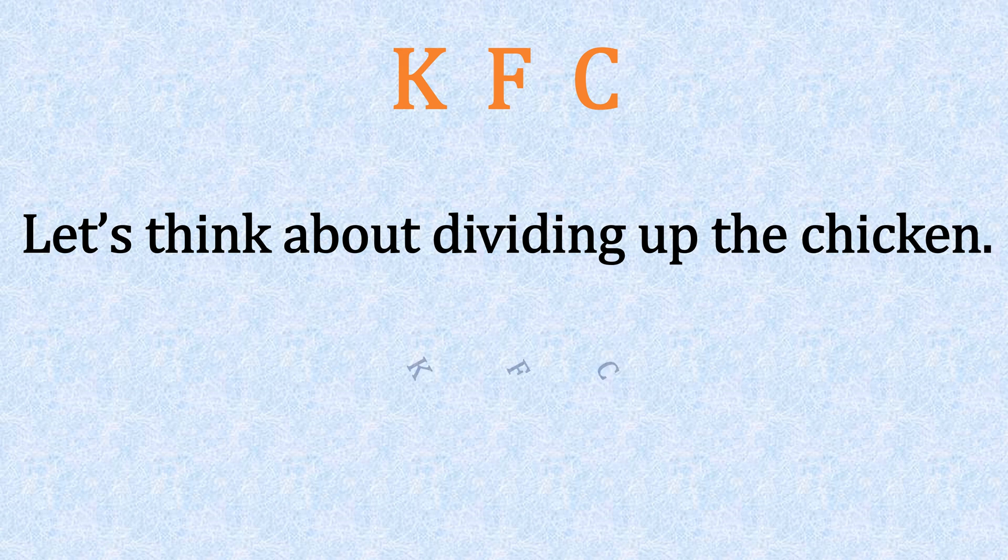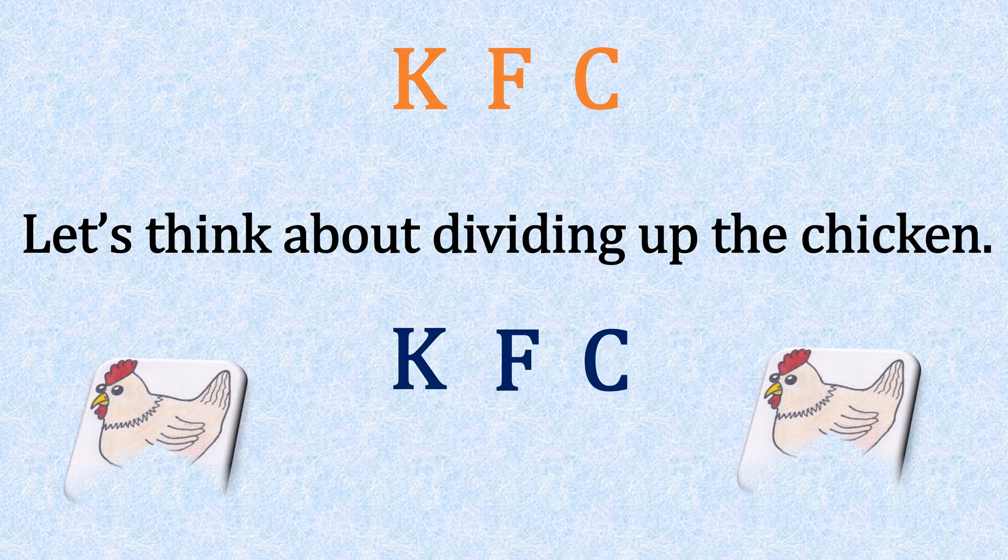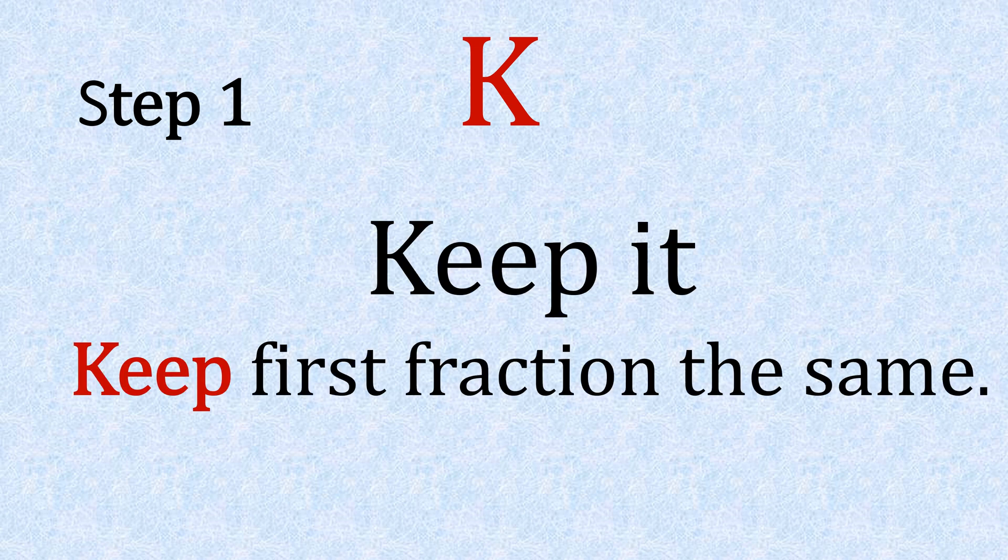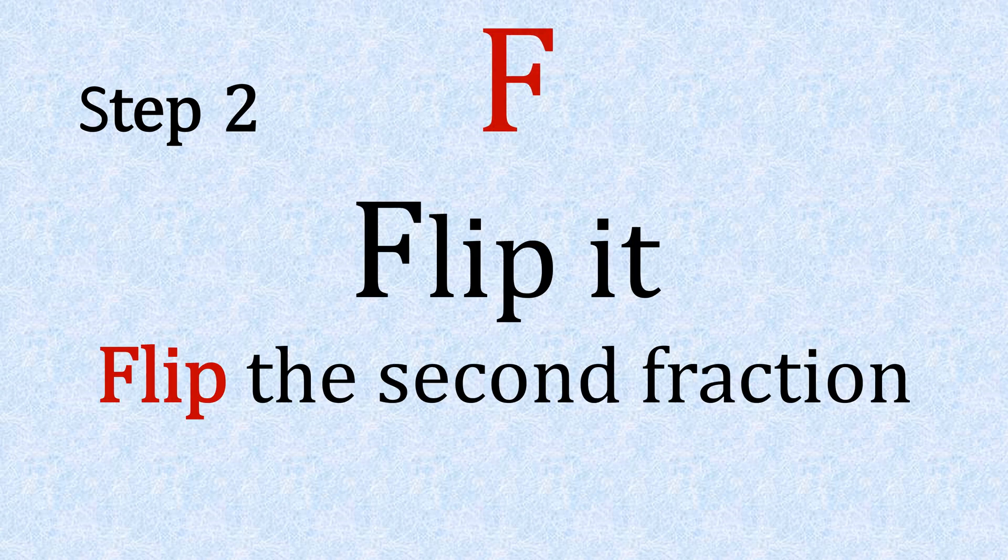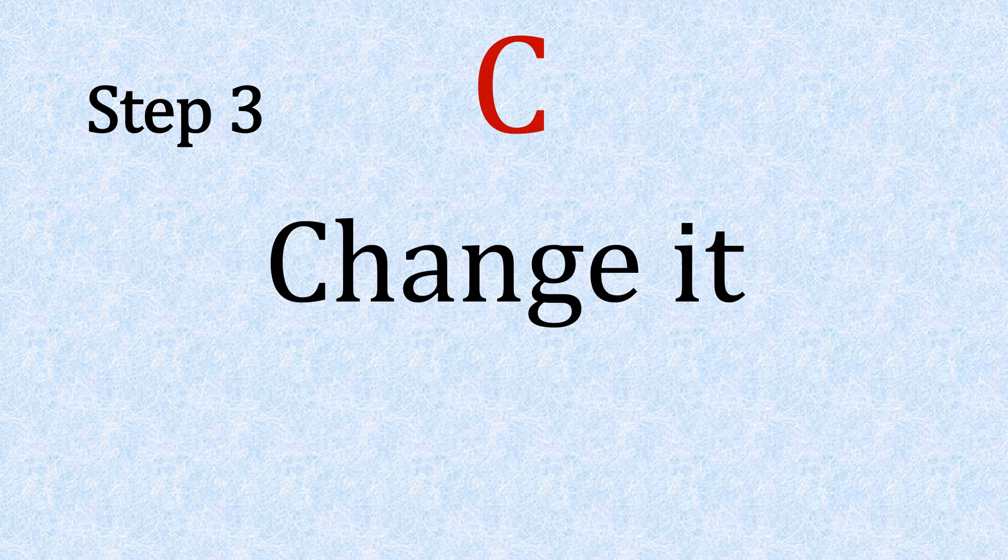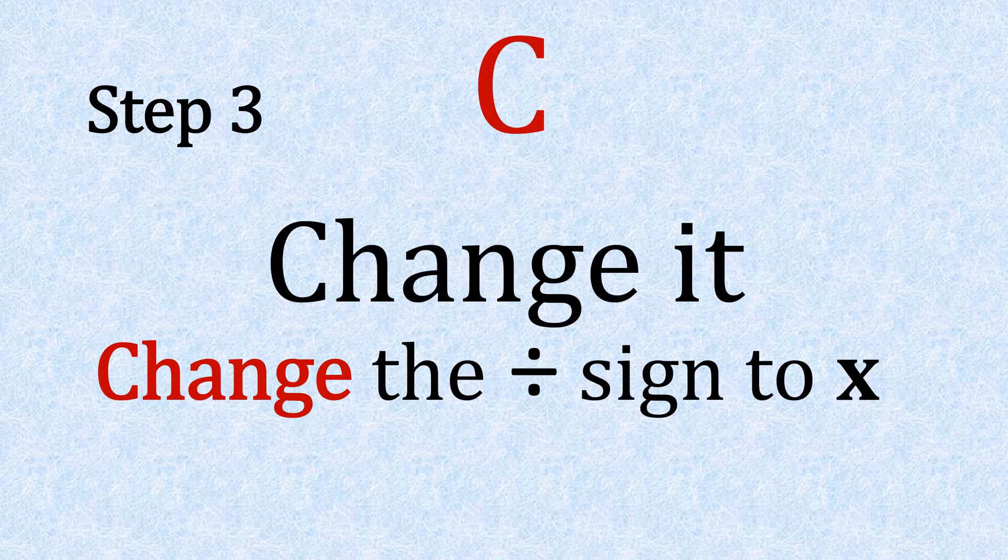To help us remember dividing, we're going to use KFC. Let's think about dividing up the chicken. Step one, K: keep it—keep the first fraction the same. Step two, F: flip it—flip the second fraction. Step three, C: change it—change the divide sign to a times.